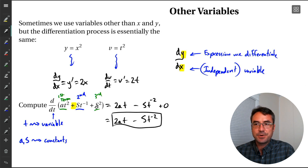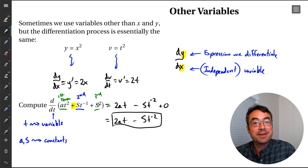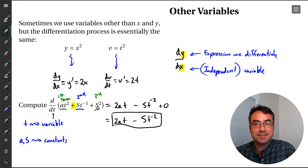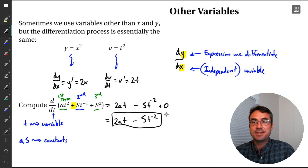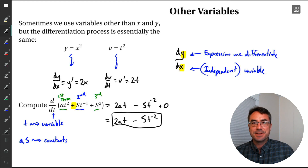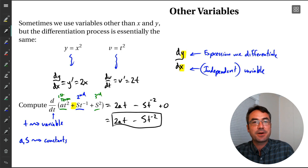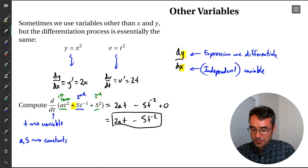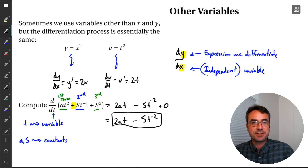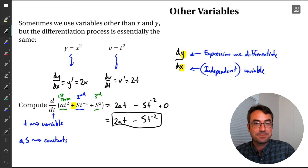You might be tempted to try a power rule on S squared, but you don't need to because S is just a constant, so S squared is also a constant, and the derivative of a constant is zero. That's good practice using the sum, difference, and constant multiple rules. The process doesn't change when we're looking at different variable terms.